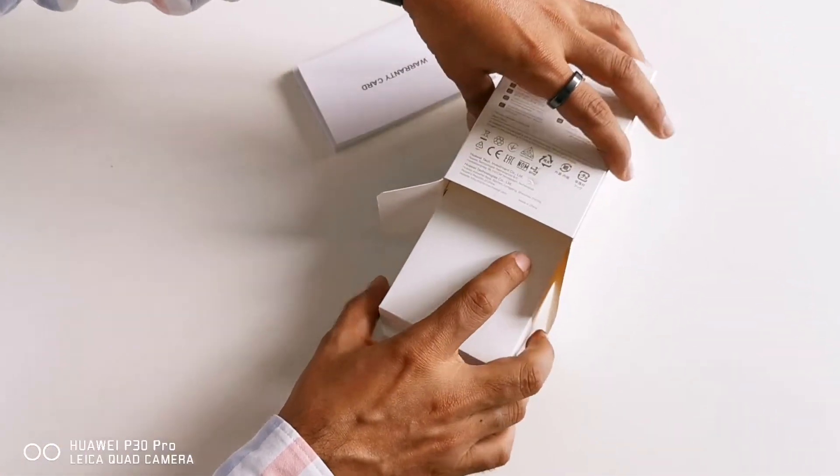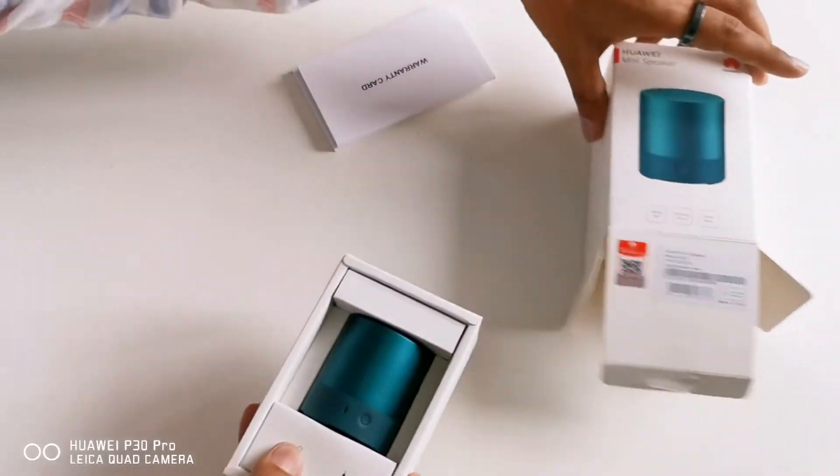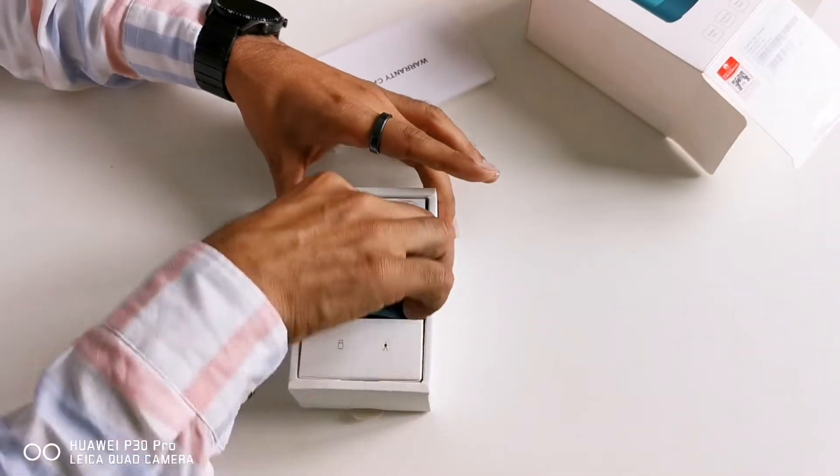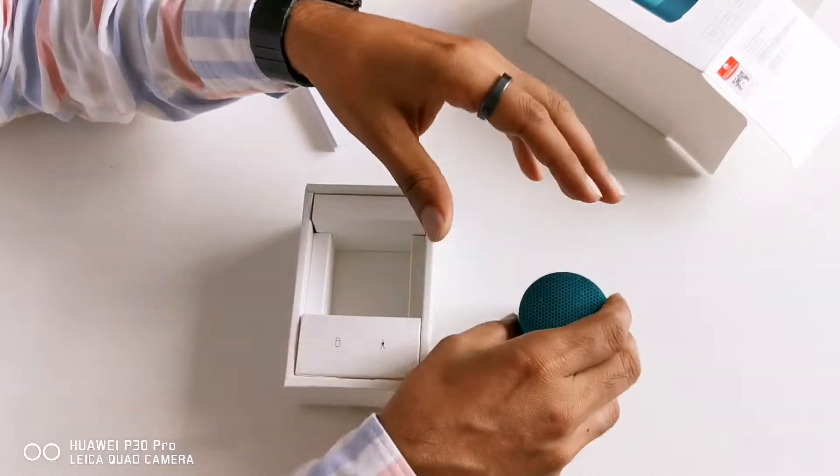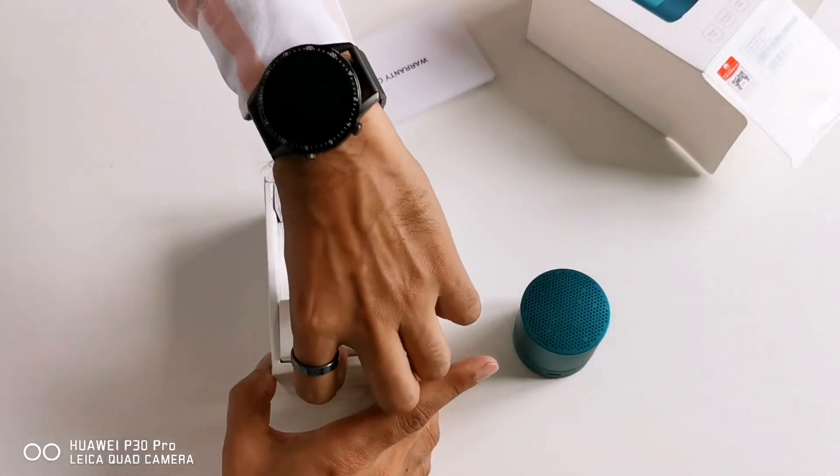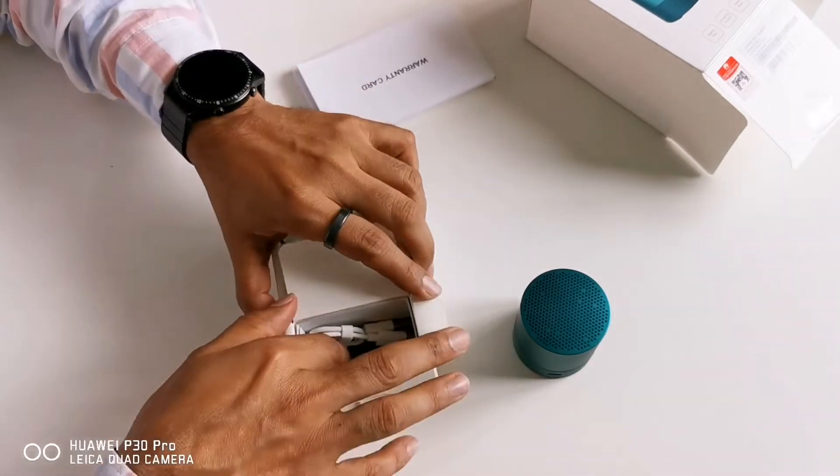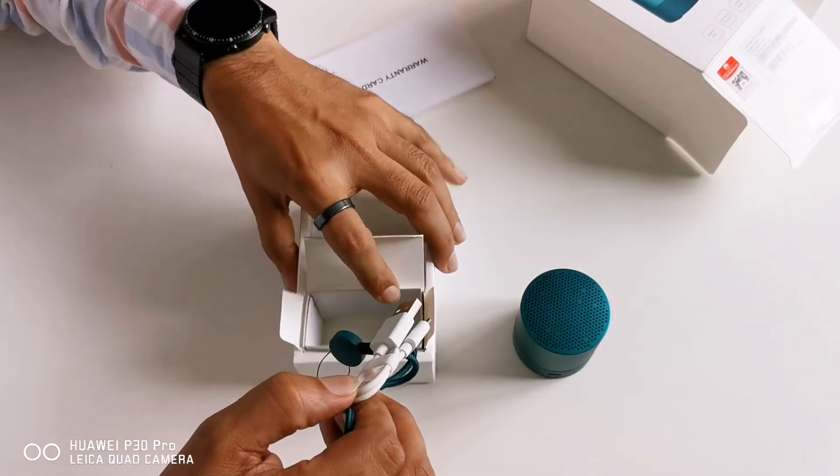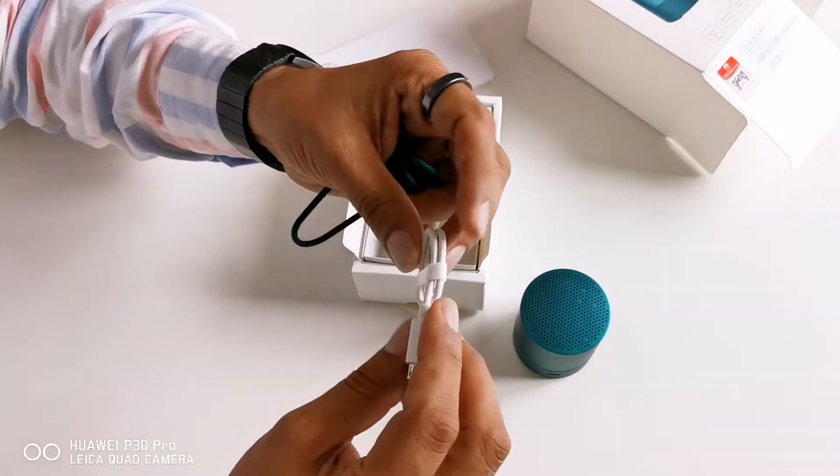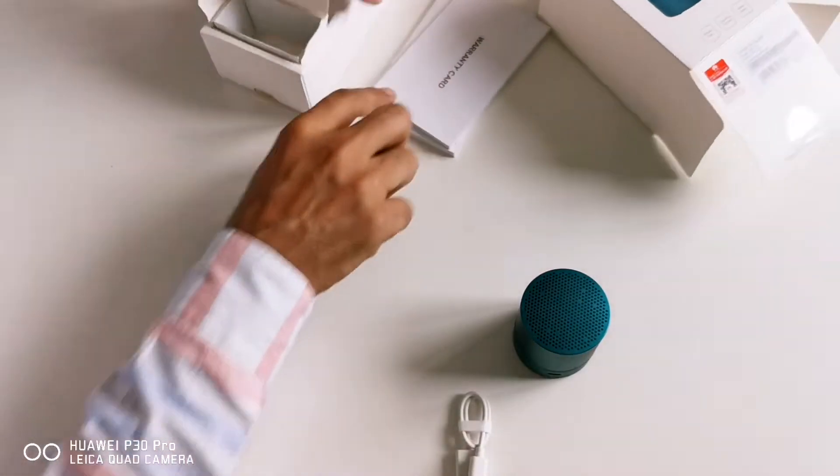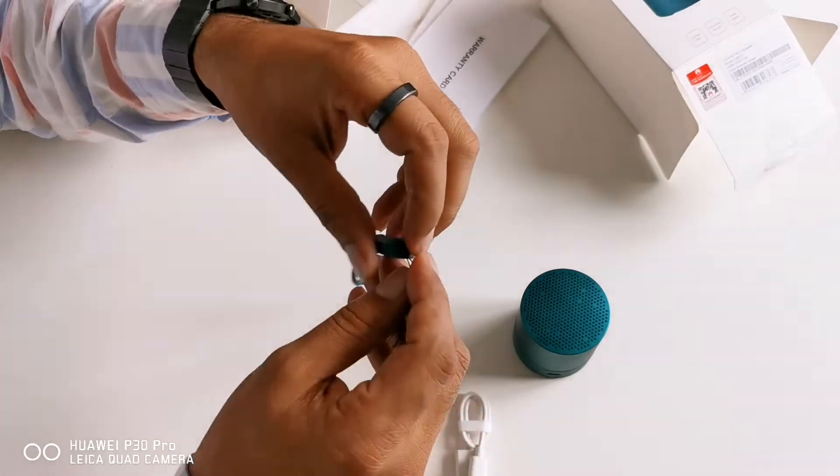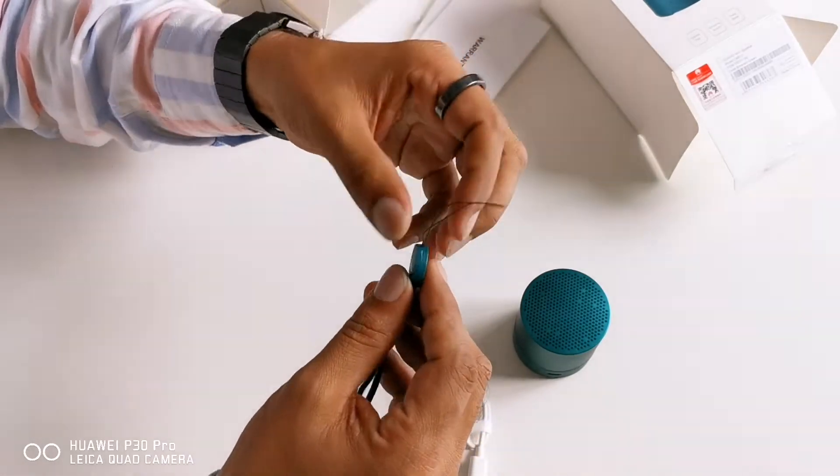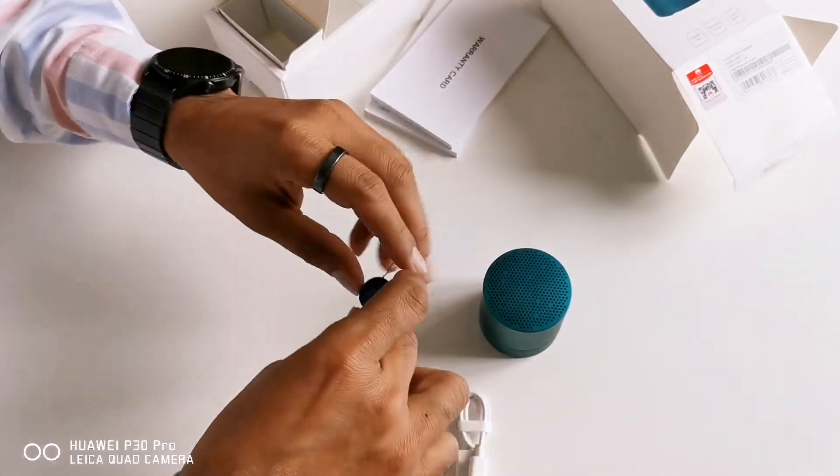And there is another compartment inside the box. You can see Huawei Mini Speaker. It's very compact and small in size and very beautiful in design. Another compartment, there are two more contents. One is this charging cable and this is a very beautiful add-on from Huawei. It's a strap. So you can use this to tie this Huawei Mini Speaker.